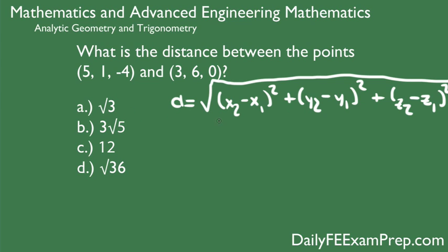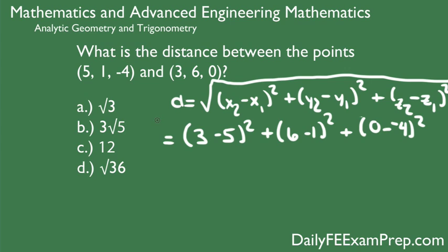And we get 3 minus 5 squared plus 6 minus 1 squared plus 0 minus negative 4 squared. And we're going to take the square root of all of that.